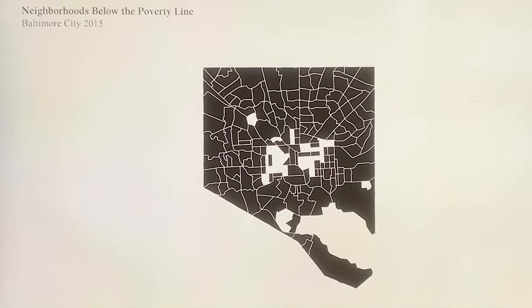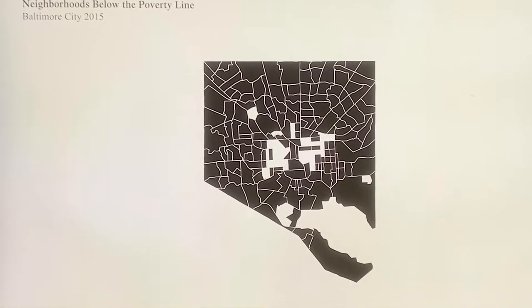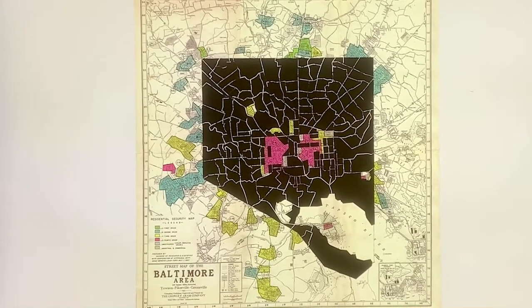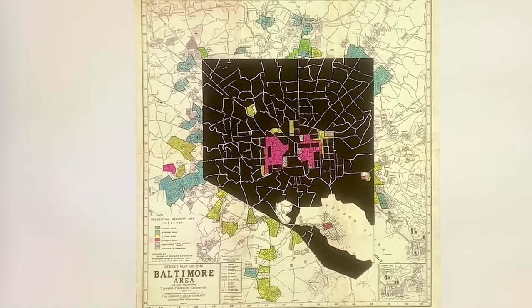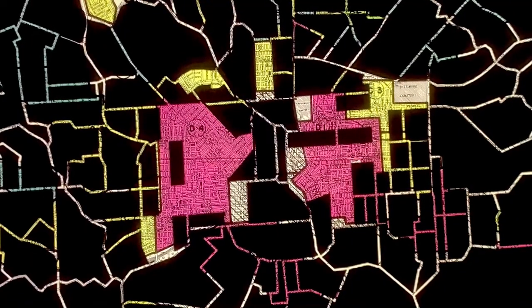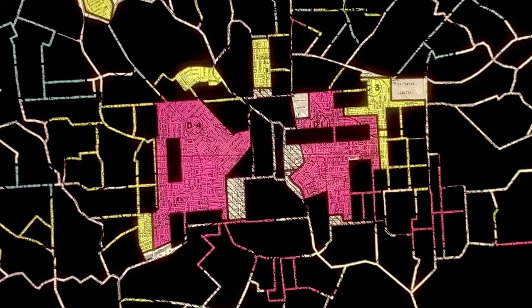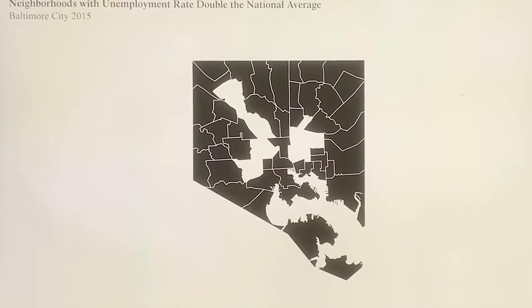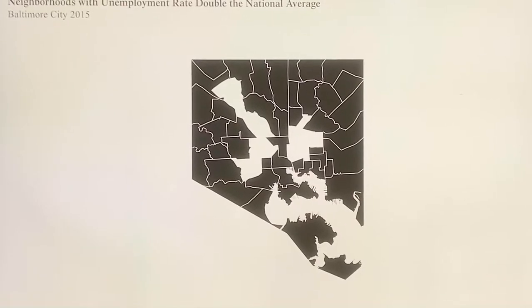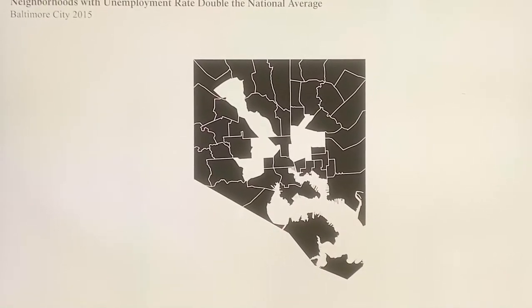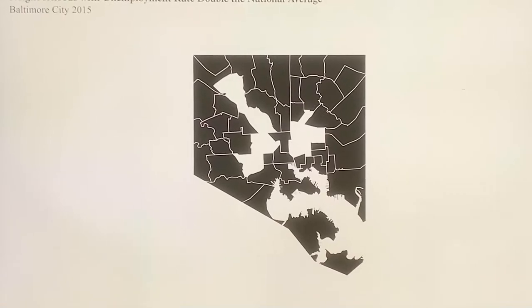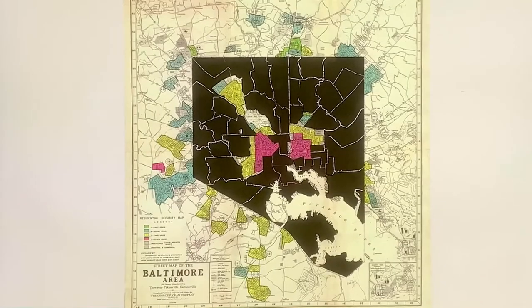A map of Baltimore neighborhoods below the poverty line, layered over a map of Baltimore neighborhoods where the unemployment rate is double or greater than the national average, layered over.